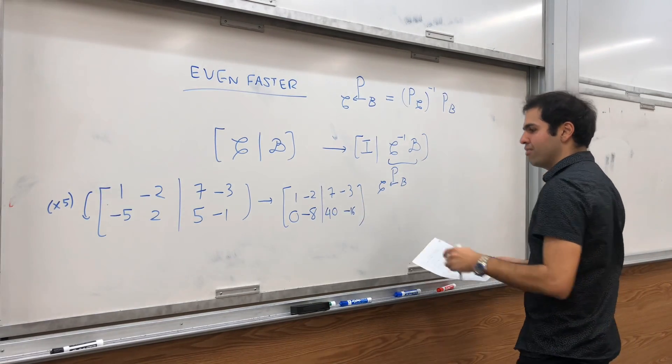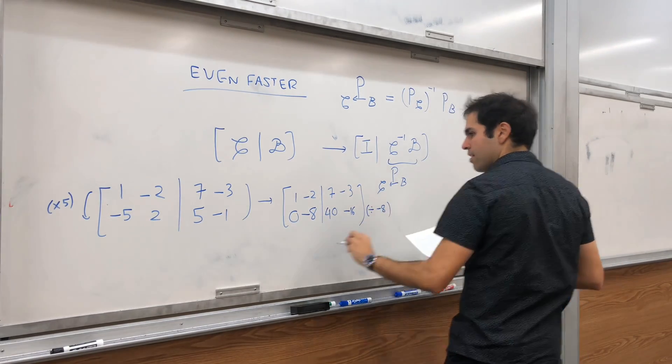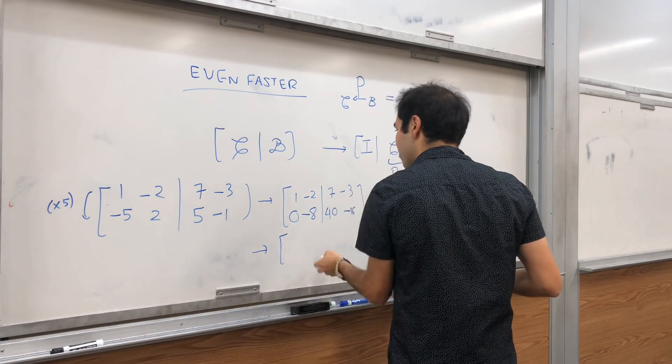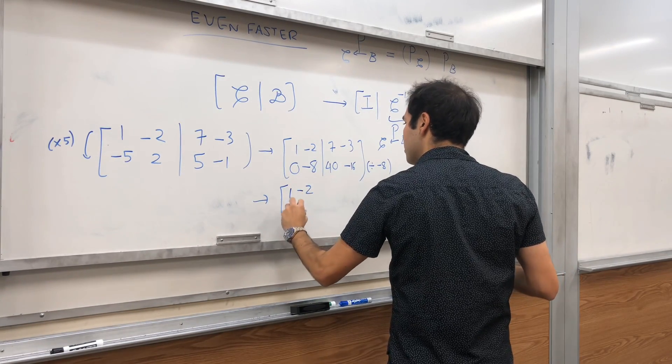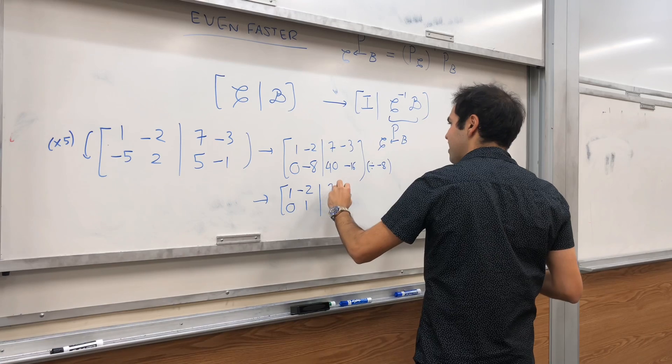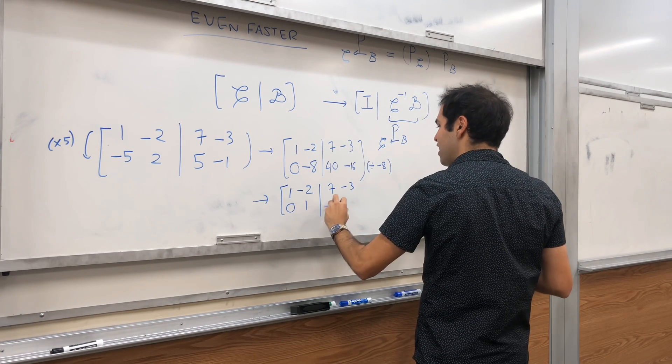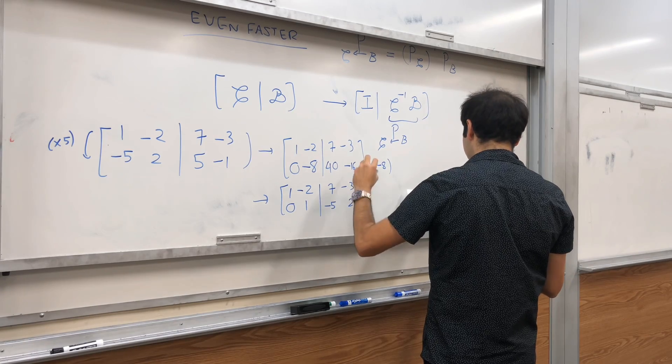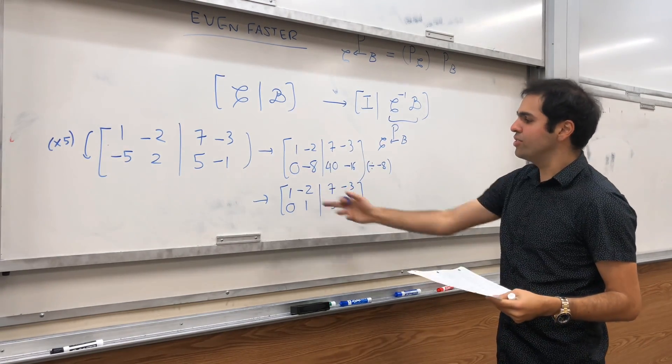And, the nice thing is, you know, you can divide all those things by 8. Or, minus 8. Then, you get, let's raise this a bit. 1 minus 2. 0, 1. And, then, 7 minus 3. And, then, minus 5, I think, and 2. And, then, to turn this into the identity,